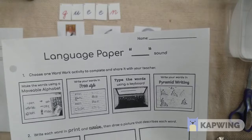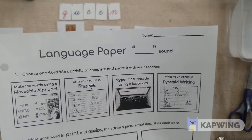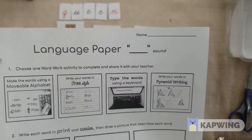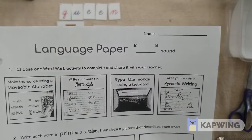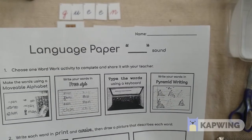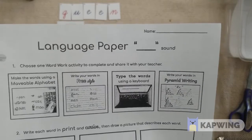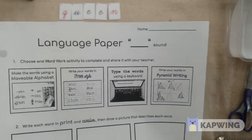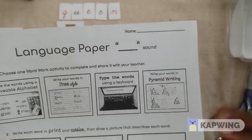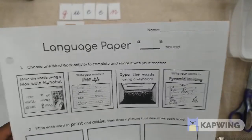You could also have an option to type the words, maybe on a Google document or in a Word document, and then send a picture of your work to your teacher or upload it to Canvas. Or you can write your words in a pyramid-type writing. That's a word work activity you could do.